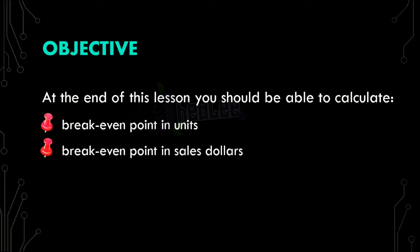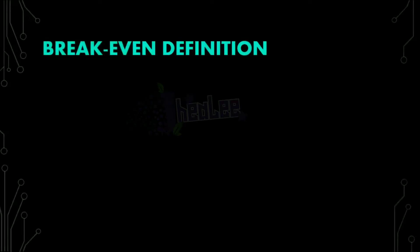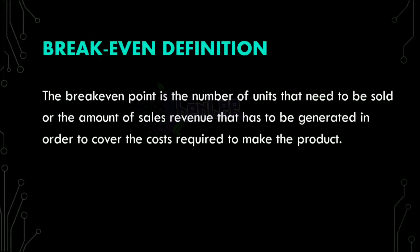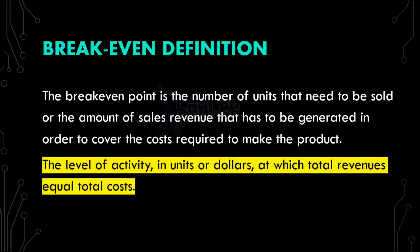Before I go any further, let's just look at what break-even is. Break-even point is the number of units that need to be sold or the amount of sales revenue that has to be generated in order to cover the cost required to make the product — basically, the level of activity in units or dollars at which total revenues equal total cost. Bear in mind that you can also use break-even to determine the sales necessary to achieve a specified level of income.